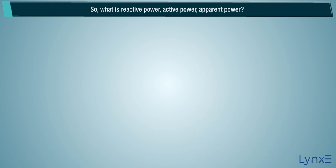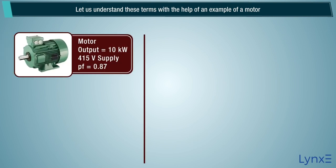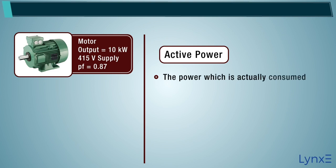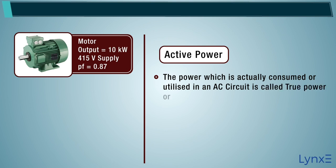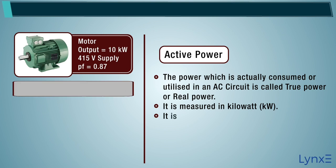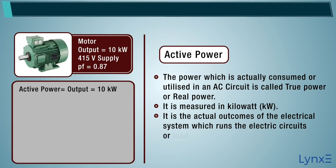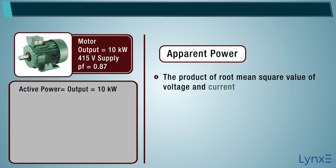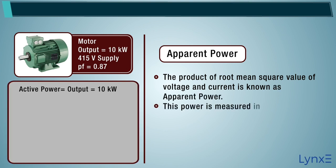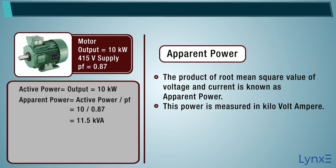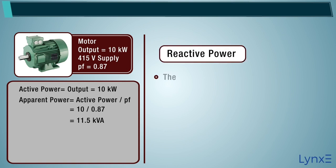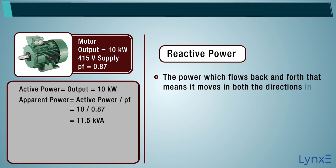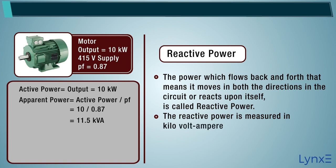So, what is reactive power, active power, apparent power? Let's understand these terms with the help of an example of a motor. Active power: the power which is actually consumed or utilized in an AC circuit is called true power or real power. It is measured in kilowatts. It is the actual outcome of the electrical system which runs the electric circuits or load. Reactive power — the power that moves in both directions in the circuit, or reacts upon itself — is called reactive power. Reactive power is measured in kilovolt ampere reactive.